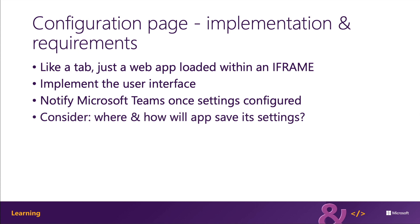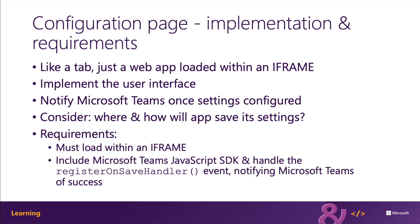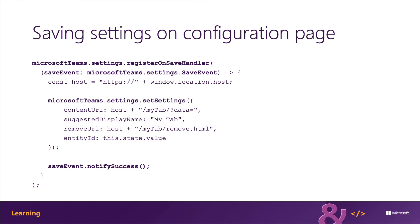You are responsible for any configuration information that your tab will need, so you'll need to keep track of that in your own tab web app. Here's the code you'll use to save settings from the configuration page. It notifies Microsoft Teams that the settings were successfully saved. Register your handler when the save button is selected on the configuration page by calling the microsoftteams.settings.registerOnSaveHandler method from the Microsoft Teams JavaScript SDK. Then use the microsoftteams.settings.settings method to save any settings on the channel tab, and finally notify Microsoft Teams that the configuration page completed successfully by calling the notify success method.